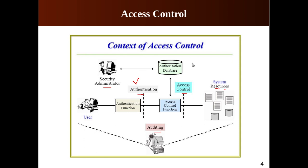Authorization is the granting of a right or permission to a system entity — which could be a user or an application — to access a system resource. The access control function determines who is trusted for a given operation: it could be add, read, modify, or delete. Authorization determines whether you have the rights or permission to perform a specific task.